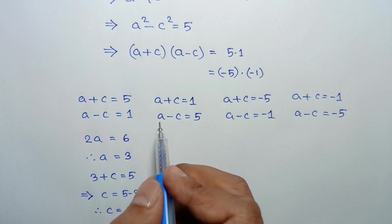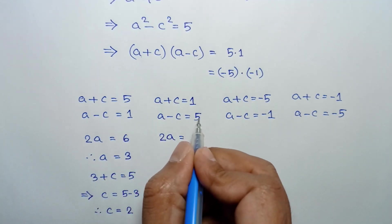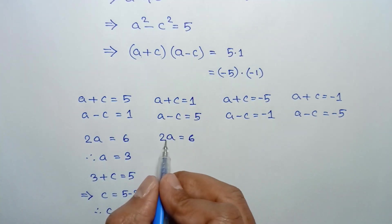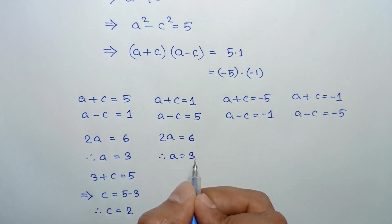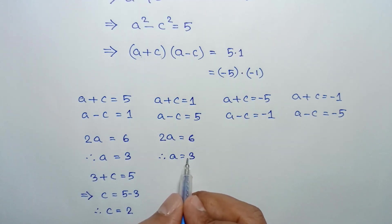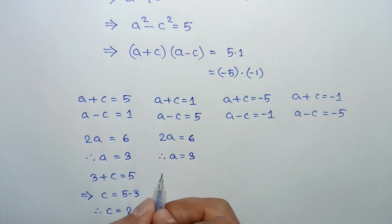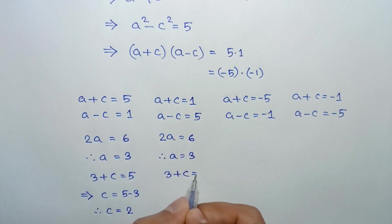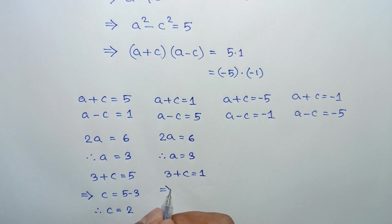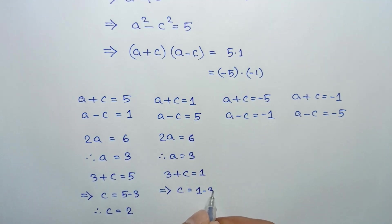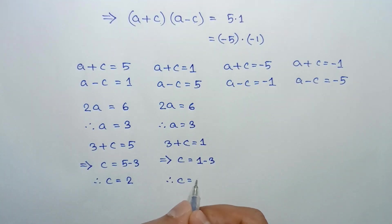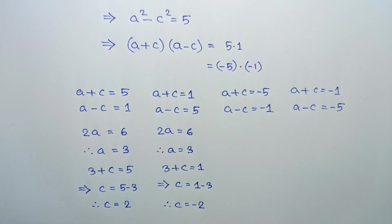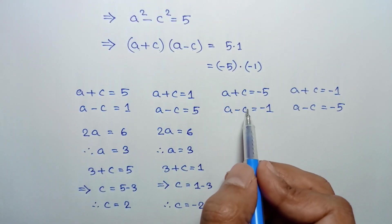Adding the second pair of equations, c cancels out. We get 2a equals 1 plus 5, which is 6. Dividing both sides by 2 gives a equals 3. Substituting a equals 3: 3 plus c equals 1, so c equals 1 minus 3, giving c equals negative 2.